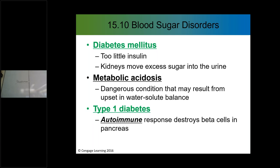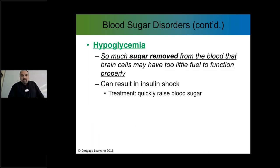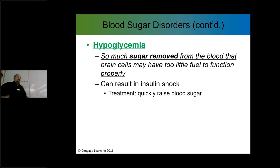Hypoglycemia — this can be as a result of a pathology, or just normal everyday living where you haven't eaten for a while and your blood glucose levels are low. Glucagon would have to be released in order to help raise blood glucose levels if you're not eating.